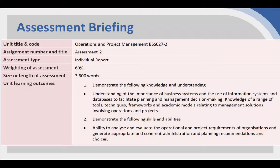The assessment is worth 60% of the unit grade, so it's weighted more heavily than the first assessment, and as such there is a greater word length. Your word count is 3,600 words, plus 10% as normal, giving you up to 3,960 words in total. That word count covers only your introduction, main body, and conclusion. Everything else — including the reference list, cover page, table of contents, executive summary, and appendices — is excluded from the word count.